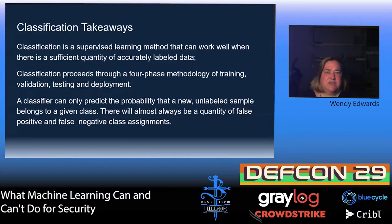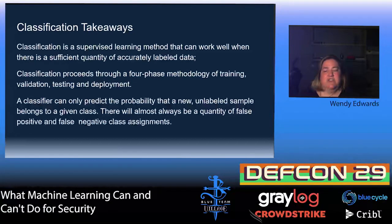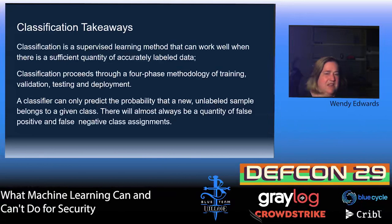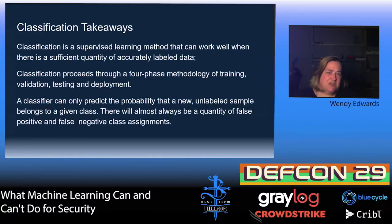Classification takeaways: classification is a supervised learning model with four phases — training, validation, testing, and deployment. You have to break your data into training and testing data. A classifier is not necessarily an absolute oracle — it's not telling you something definitely is or isn't; it's telling you how likely it is that something belongs to a particular category. For example, in your email, benign emails sometimes get caught in your spam filter and spam sometimes gets through — that's an example of it not being perfect.